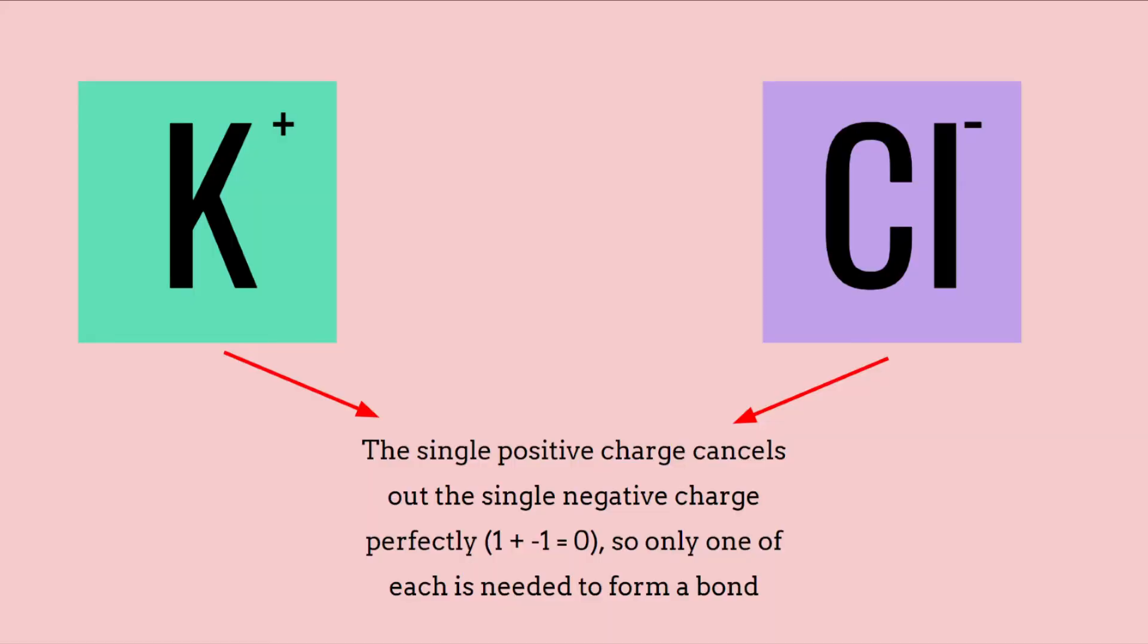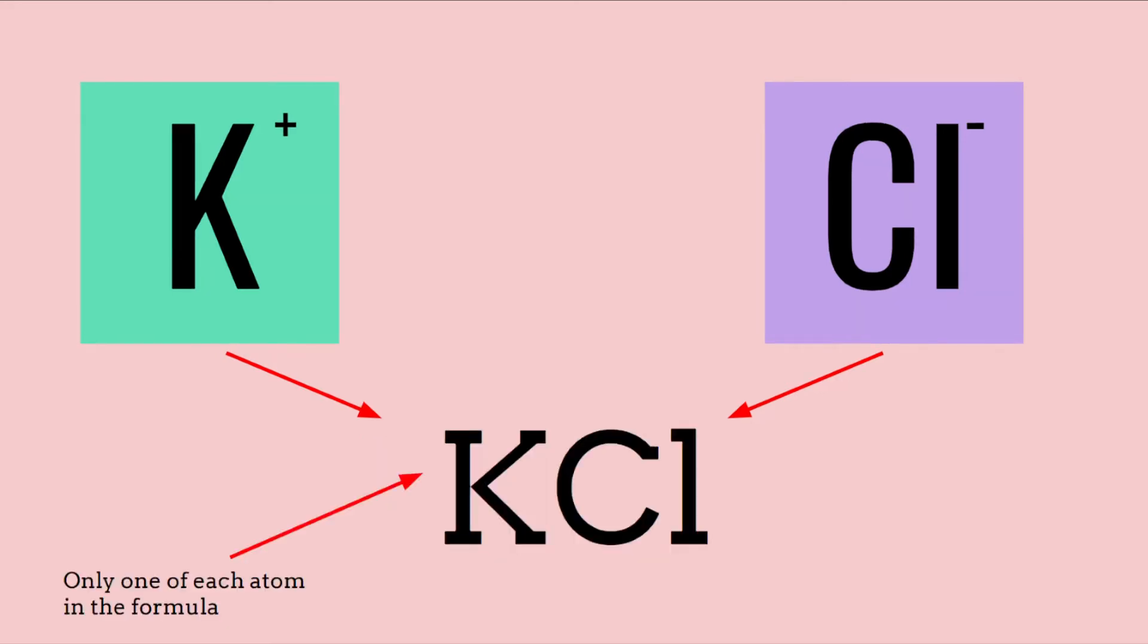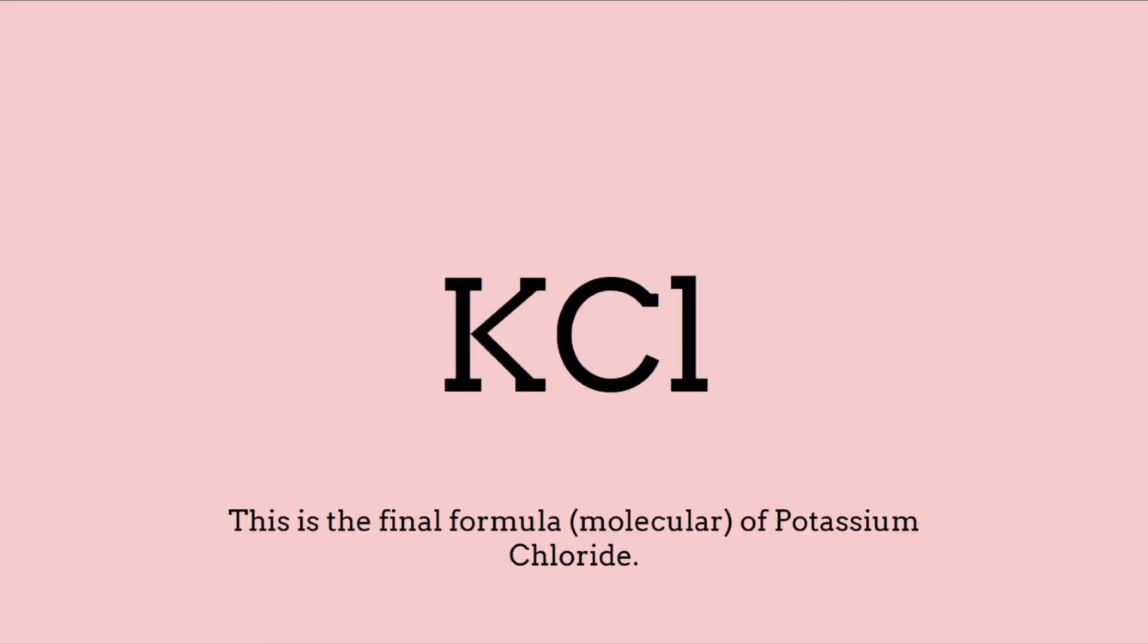Take potassium chloride, a bond between potassium and chlorine. Potassium has a charge of plus one, and chlorine has a charge of negative one. So you only need one potassium atom and one chlorine atom to keep the charges equal.